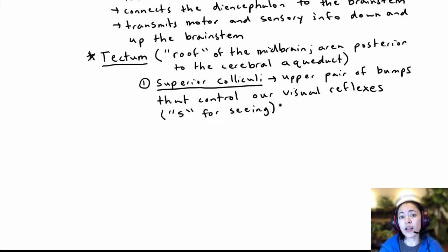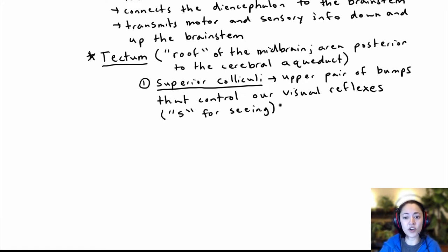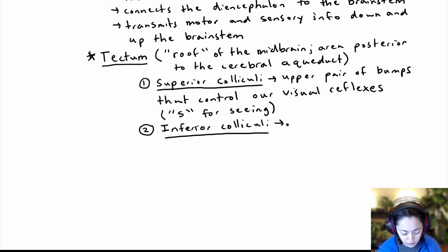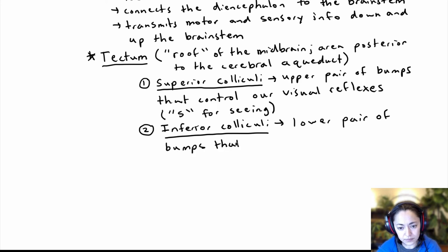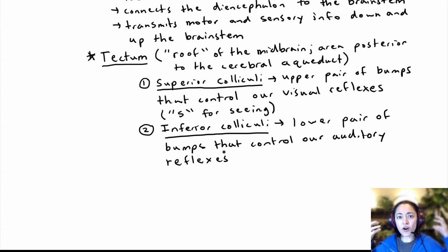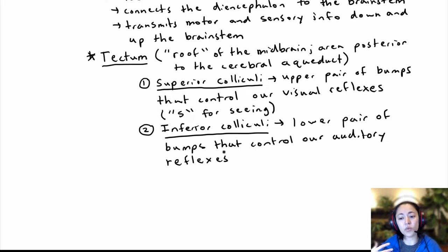The superior colliculi control visual reflexes we don't have voluntary control over — things like orienting to visual stimuli or how our pupils respond to changes in light intensity. The other part of the tectum is the inferior colliculi, a lower pair of bumps that control auditory reflexes. These are reflexes we can't control, such as orienting toward a sound or the ear dampening a really loud sound.